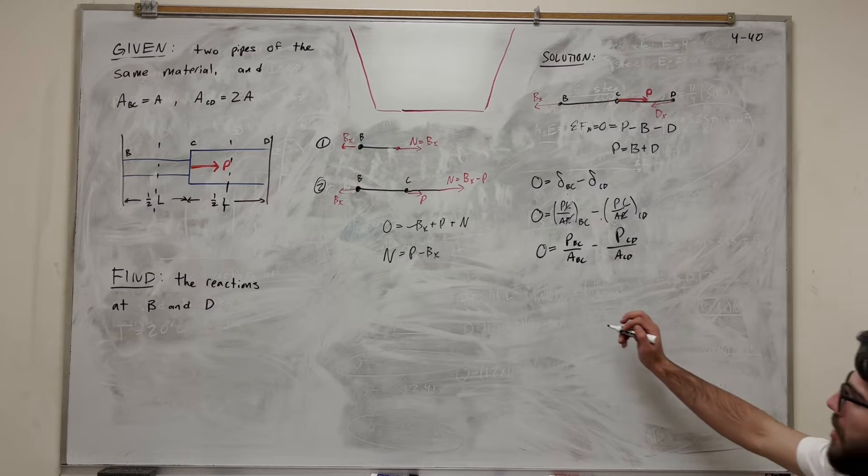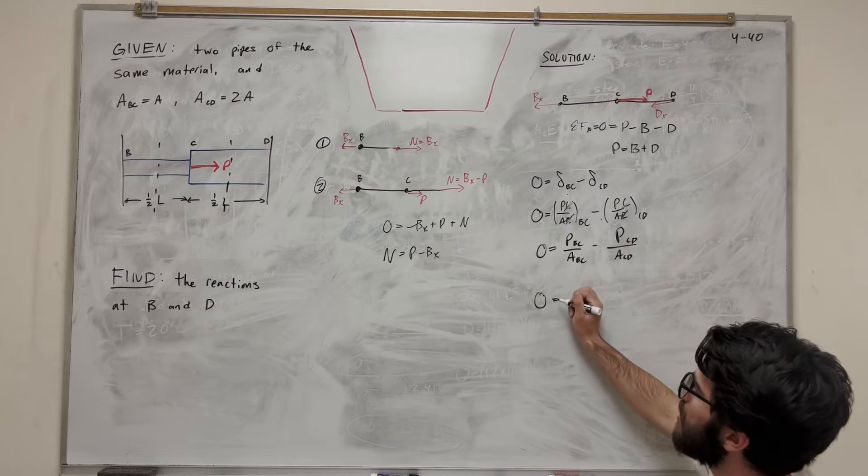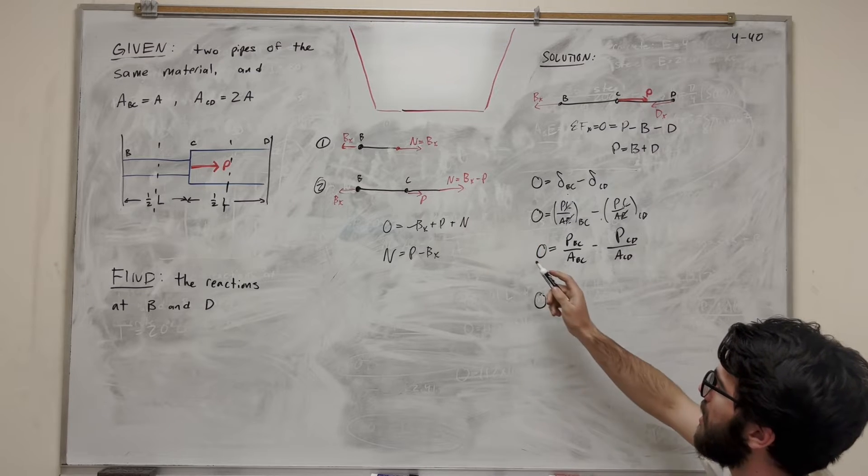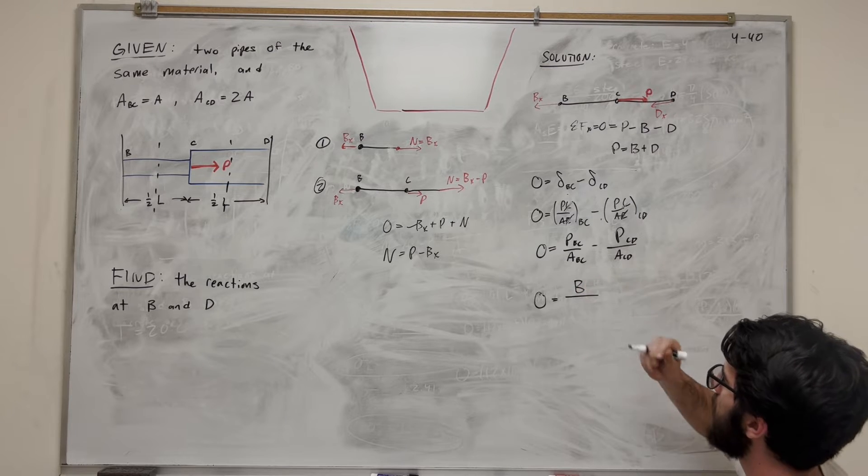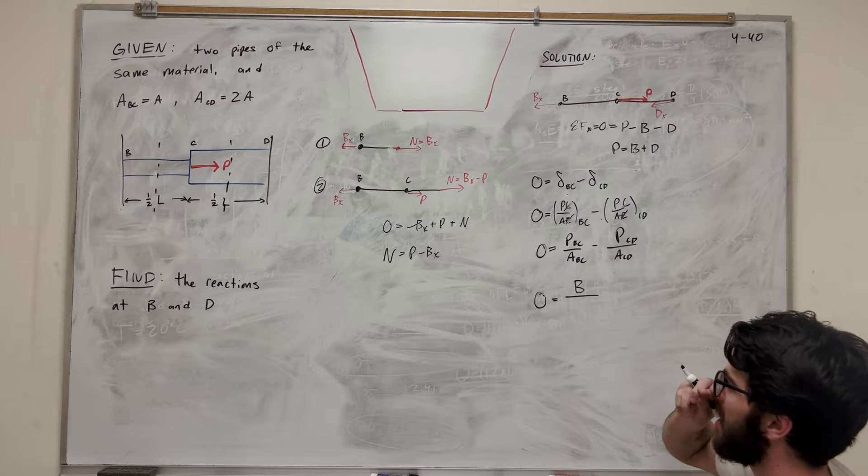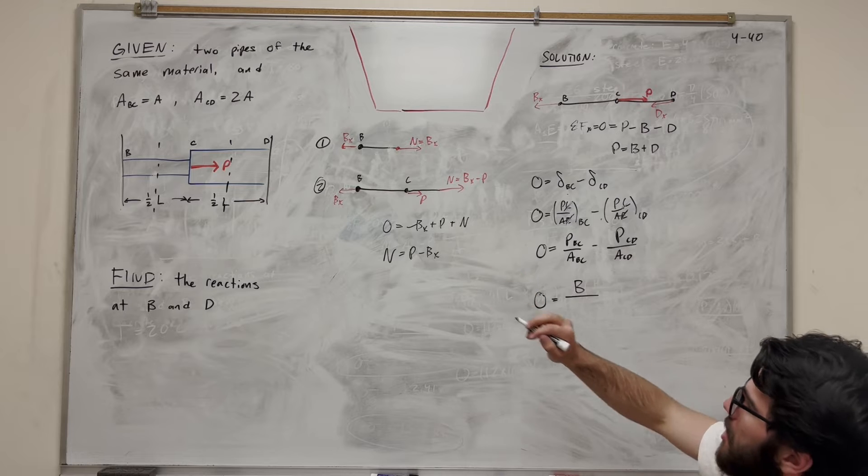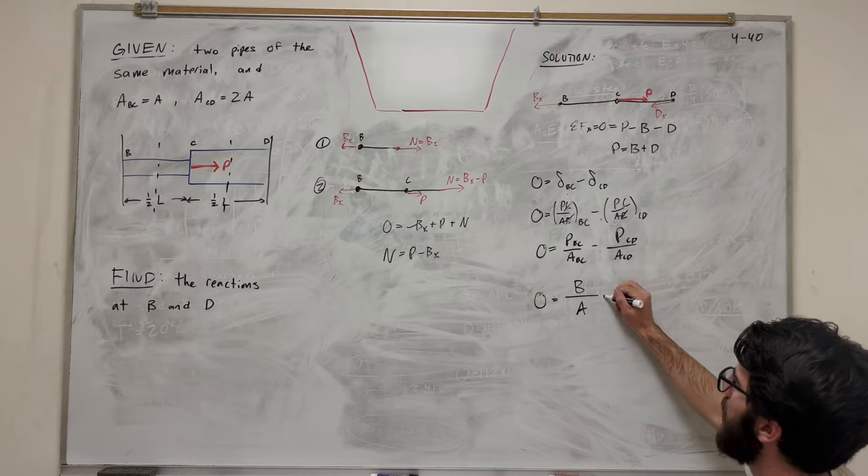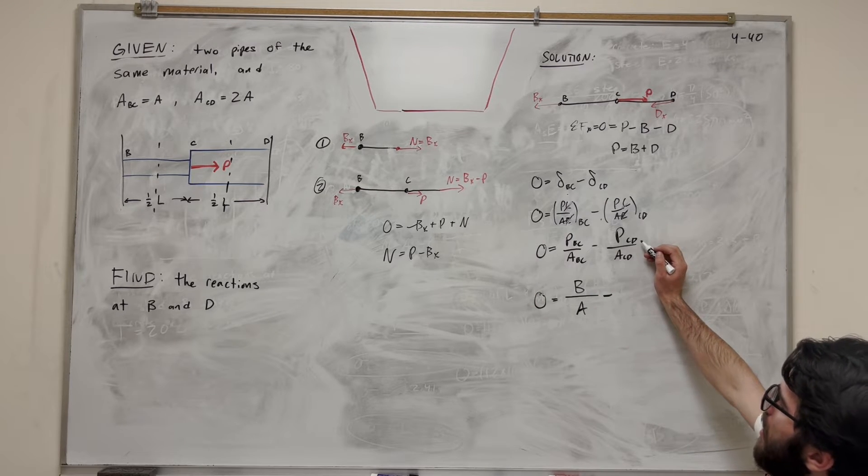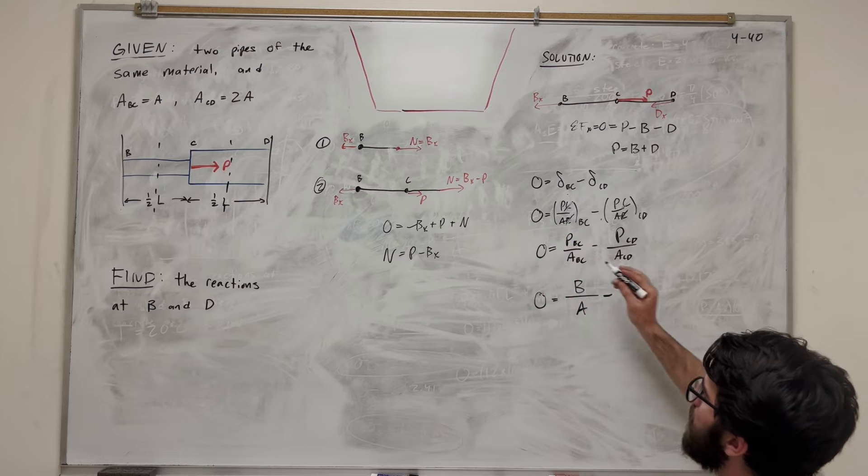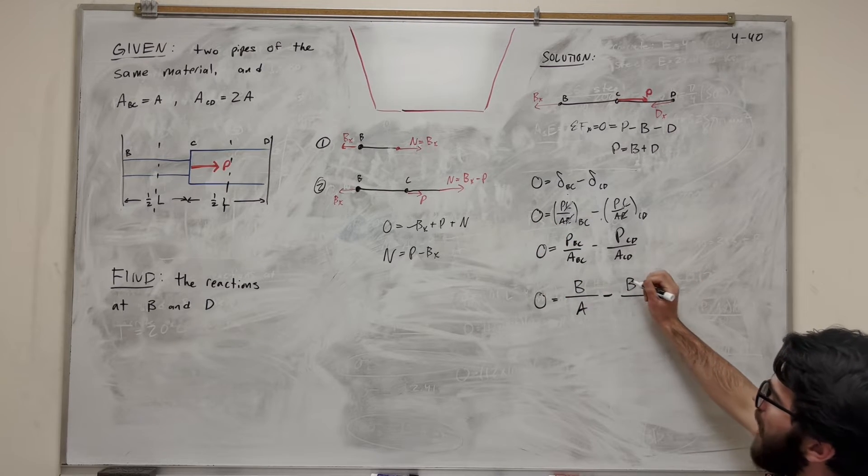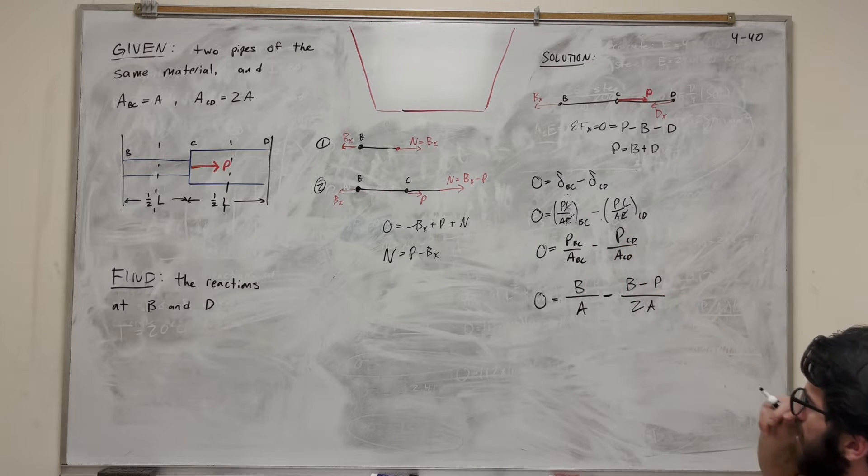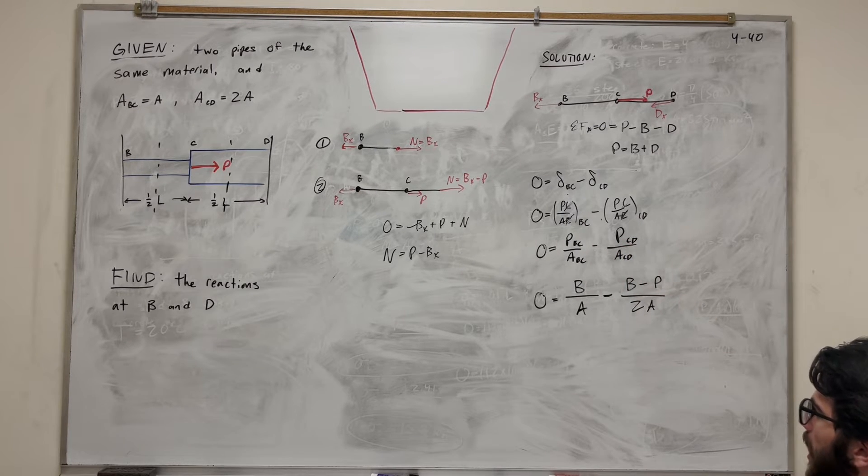And let's just go ahead and do that. So we said normal of BC is just B of X. And it's expanding. So we can just say B. And then area. Area of BC is just equal to A. So then we can subtract it from CD. So the force at CD is this B of X minus P. And then over that, area CD is equal to 2A.